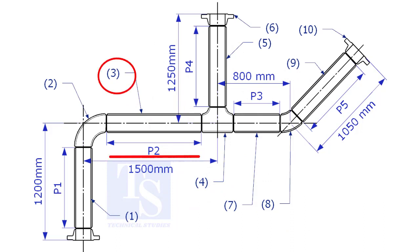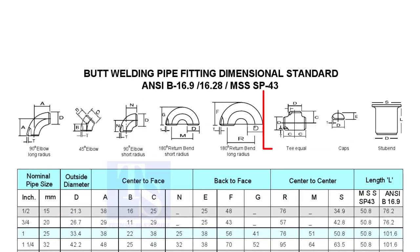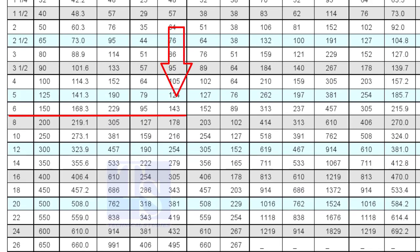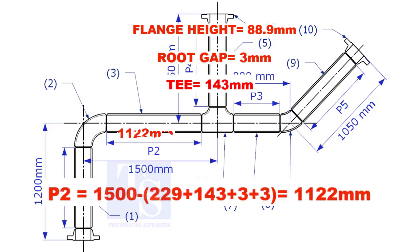Let us calculate the length of item number 3. We already know the takeoff length of the 6 inch long radius elbow. Now, check the chart for the takeoff of length of the equal tee. It is 143 millimeters. The length of item number 3 is 1122 millimeters.